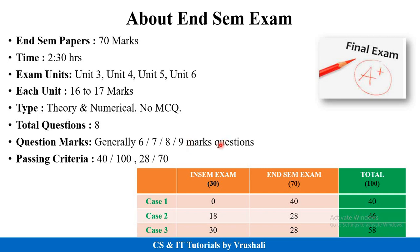What is the passing criteria in engineering? You have 30 marks in the internal exam and 70 marks in the NSM exam, totaling 100 marks per subject. There are two passing criteria: first, you require a minimum of 40 marks out of 100. Second, you require a minimum of 28 marks out of 70 in the NSM exam. So you should prepare according to both these criteria.